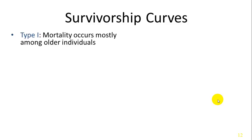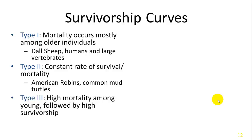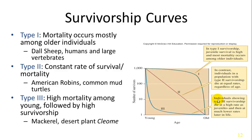Three basic survivorship curve patterns exist. Type 1: mortality occurs mostly among older individuals — this includes Dall sheep, humans, and large vertebrates. Type 2: there is a constant rate of survival across all ages, so the same proportion of individuals die whether going from age 4 to 5 or 10 to 11 — examples include American robins and common mud turtles. Type 3: there is high mortality among the young, but once individuals make it to adulthood, there is high survivorship and they tend to live longer — examples include mackerel and the desert plant cleome.